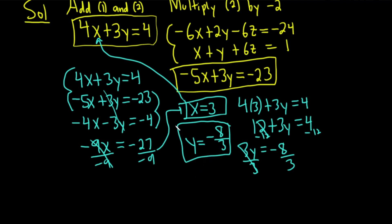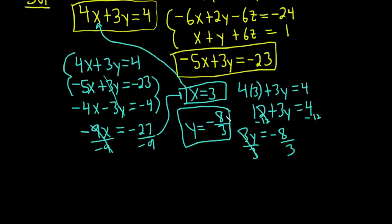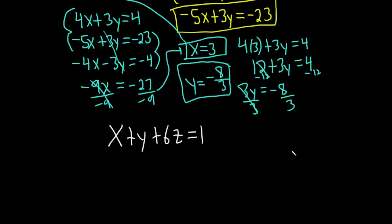We've got x and y, we just need z. We can use any equation we want to find z, any of the first three equations. Let's use the last one: x plus y plus 6z equals 1. Now we're going to take our x and our y and plug it into this equation.